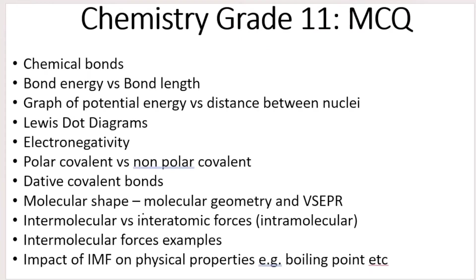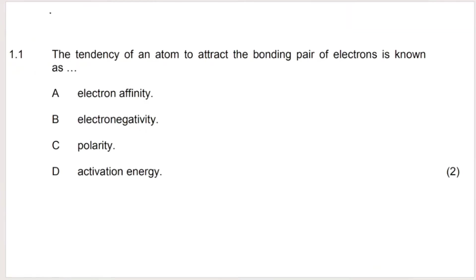In today's video these multiple choice questions will cover a wide span of topics, including those listed here on the screen. Our first question says: the tendency of an atom to attract the bonding pair of electrons is known as — this is almost a definition multiple choice question. The term that best fits is electronegativity. If an atom has a higher electronegativity, it will have a stronger attraction on the bonding pair of electrons.